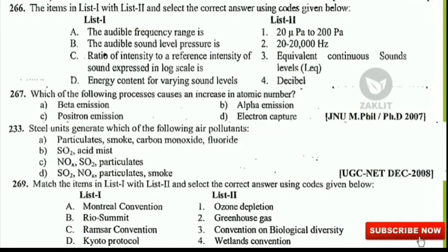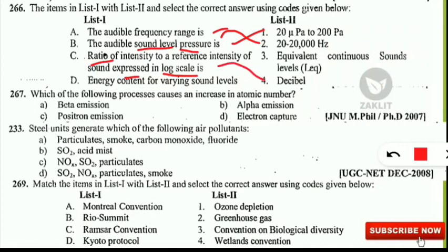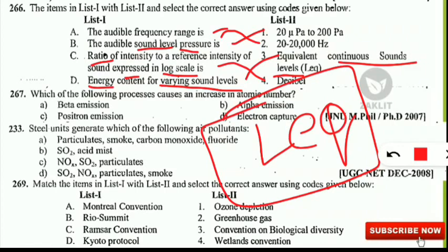In this slide, the first question is a match-the-following where list one and list two are mostly from sound and related energy. The audible frequency range of humans is 20 to 20,000 Hz. The audible sound level pressure range is 20 micro-Pascal to 200 Pascal, which matches the first option. The ratio of intensity to a reference intensity of sound expressed on a logarithmic scale is known as the decibel. The energy content for varying sound levels is equivalent to the continuous sound level, measured as L-equivalent (L_EQ).